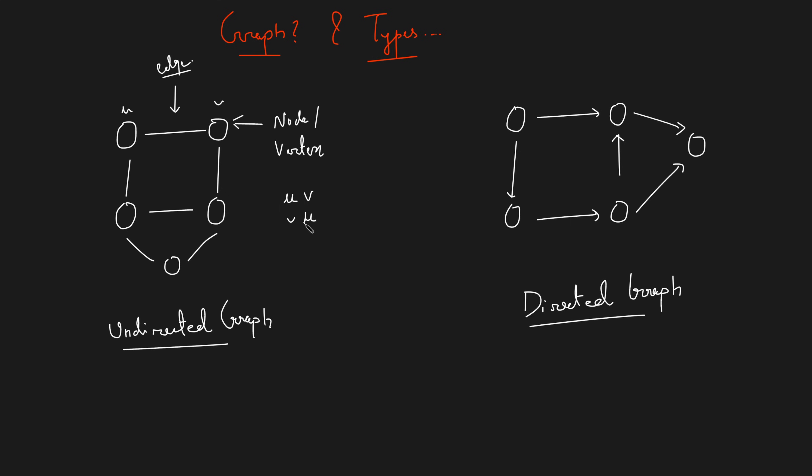The reason you can say both is because the edge is undirected. Whenever you have a set of vertices connected by edges and you represent them, that is what is known as a graph. For example, this node is connected to this node, this node is connected to this node, and so on — there are pairs of nodes connected by an edge. So this is a high-level definition of a graph.